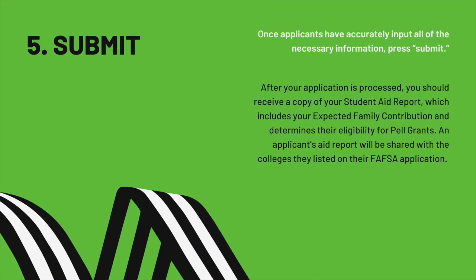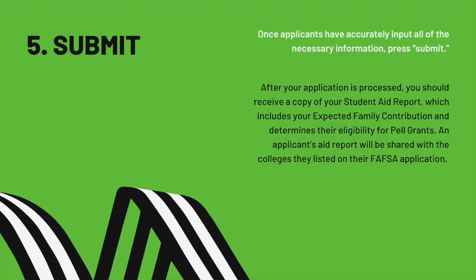Step five: submit. Once you have accurately inputted all of the necessary information, press submit. After each application is processed, you should receive a copy of your student aid report, which includes your expected family contribution and determines your eligibility for grants. This report will be shared with the colleges you listed on the FAFSA application.